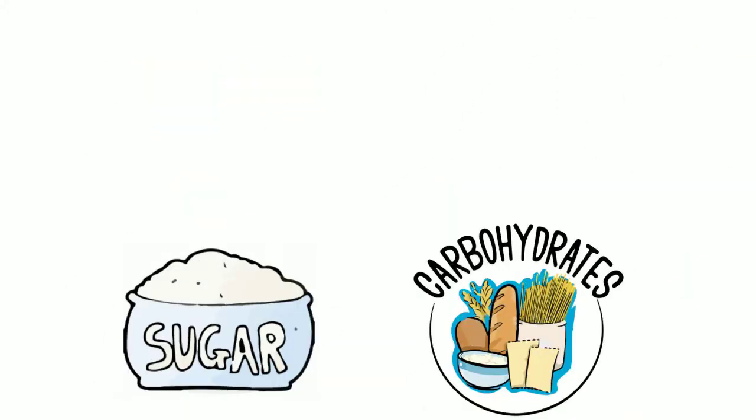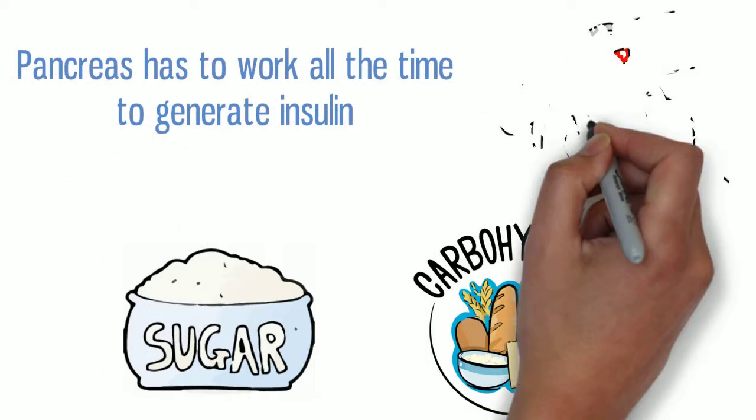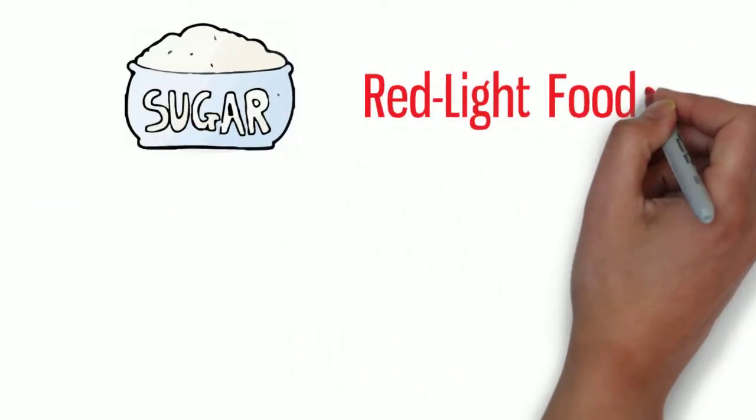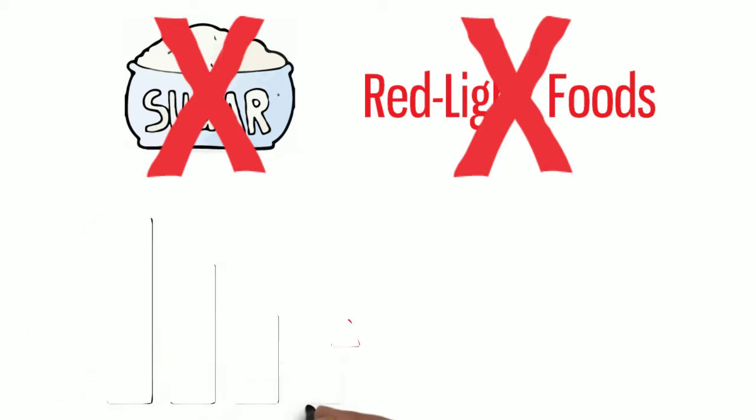How? Because when you consume sugar or carbohydrates, your pancreas has to work constantly to generate insulin, which raises the insulin level. If you don't consume sugar and red light foods, your pancreas won't have to produce as much insulin. The insulin level will slowly lower to a threshold where your body will be able to burn fat.